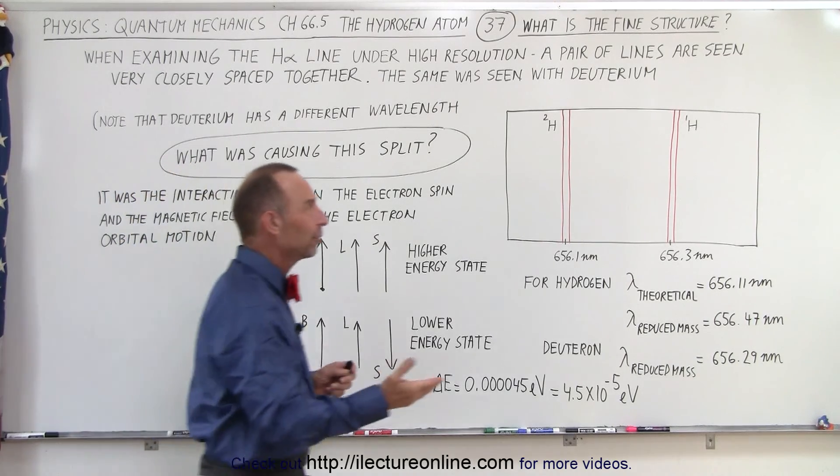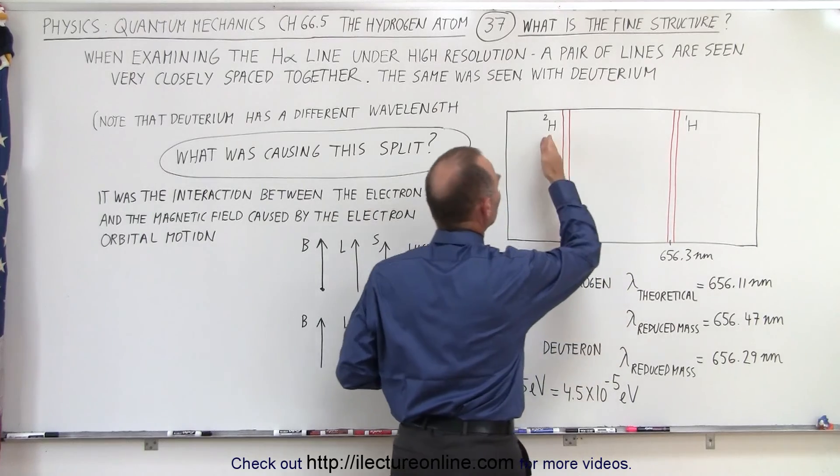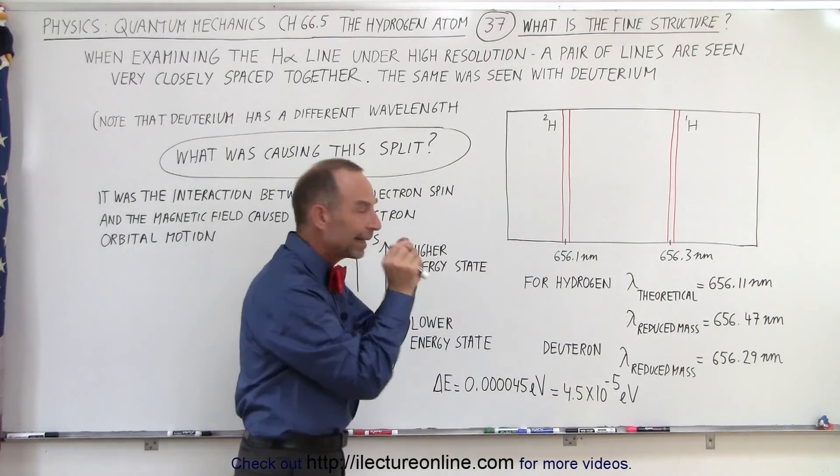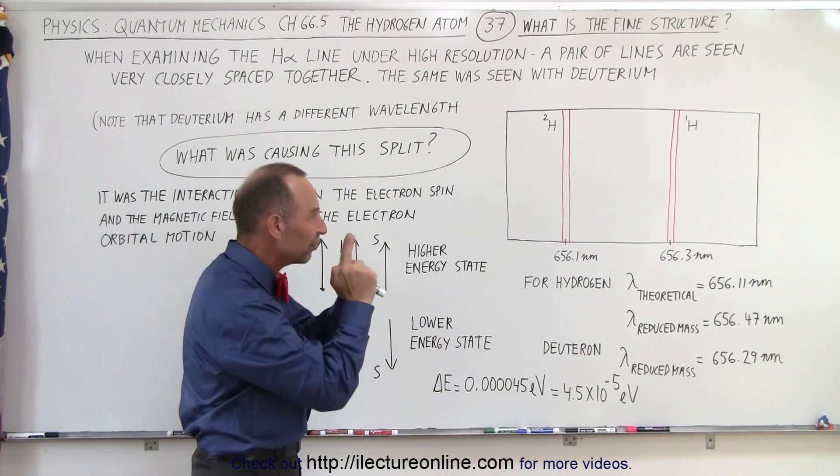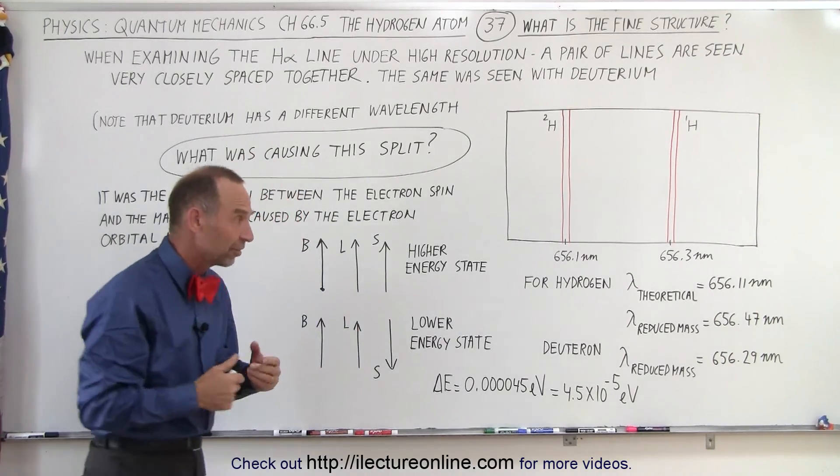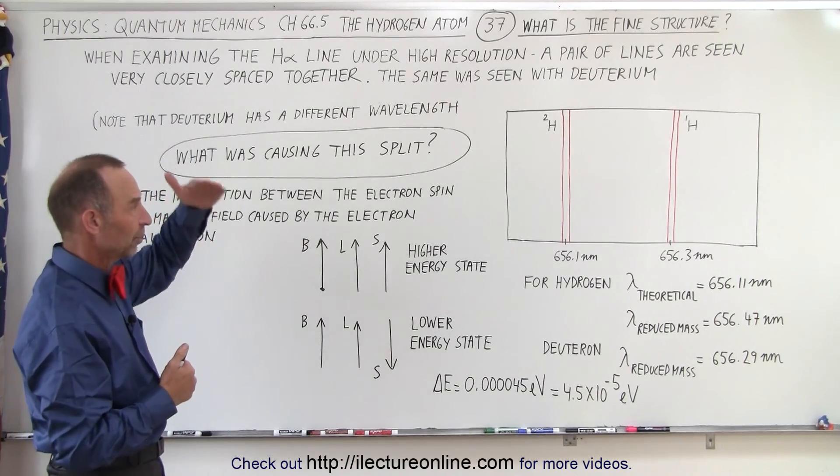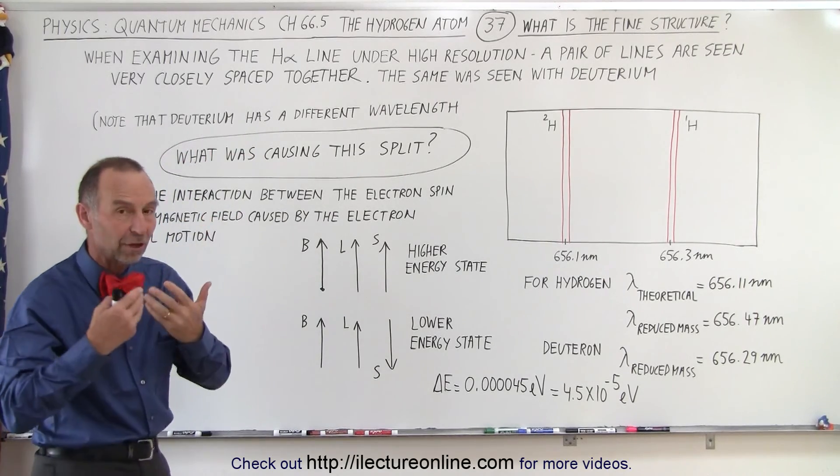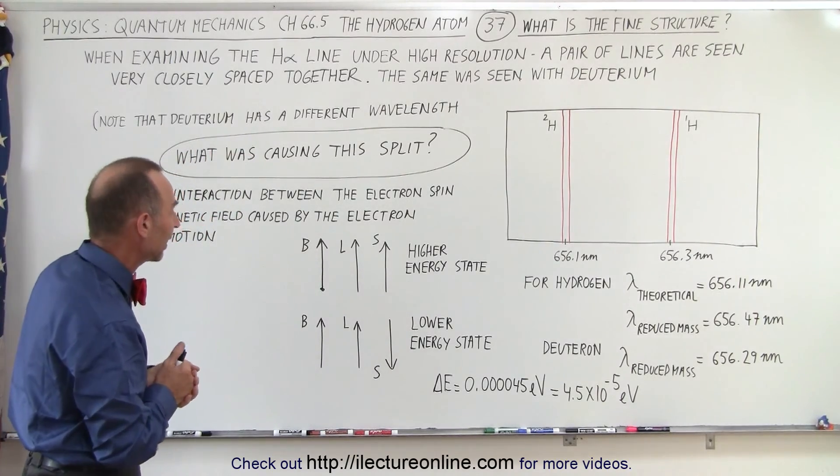And it doesn't matter if you look at hydrogen or deuterium, looking at the deuteron, again we'll see the very closely spaced two lines representing the H-alpha jump, the first Balmer series jump, where the electron jumps from the third to the second energy, giving us a visible photon of red light.